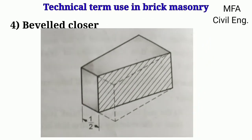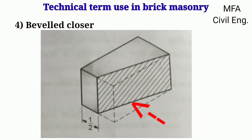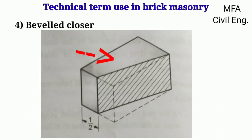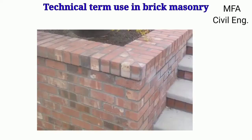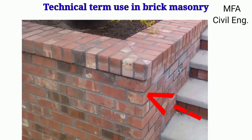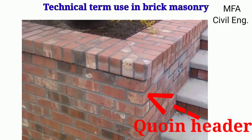When a triangular portion of a brick is cut through its half width and to a full length, the remaining portion after cutting is called the bevel closure. The brick used at the corner where two walls meet at 90 degrees is called the queen header.